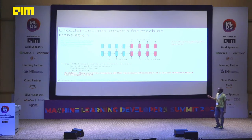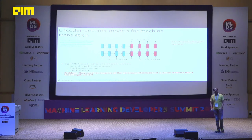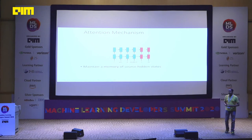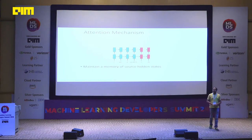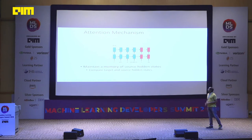The problem with encoder-decoder models is that you need to compress all the information in a sentence into one single fixed-length vector, and that vector drives the entire output. One vector of 100 or 1,000 neurons doesn't really capture everything. That's why people came up with attentional models. This is motivated by how we work: when translating, for each output word you pay attention to particular words in the input.